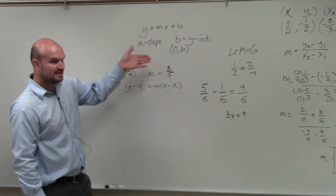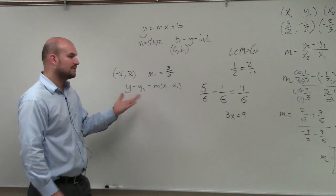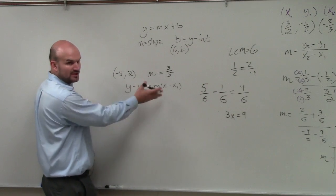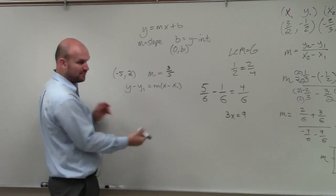Well, in this case, we're given a point and we're given a slope. So what we're going to want to use is another form of an equation, which we call the point-slope form, which I wrote on your piece of paper for you, which is right here.